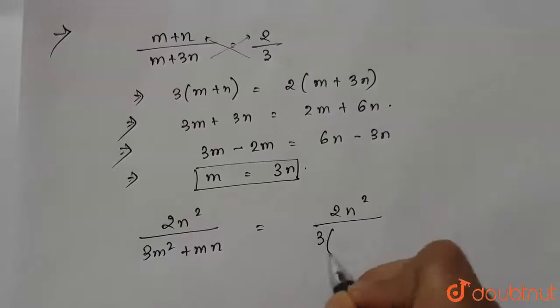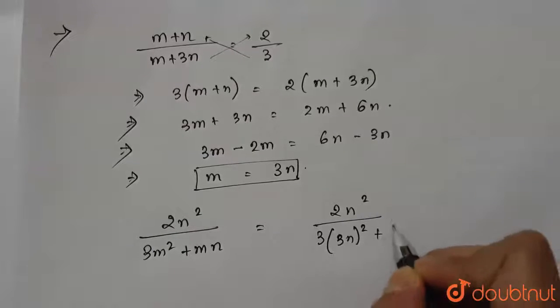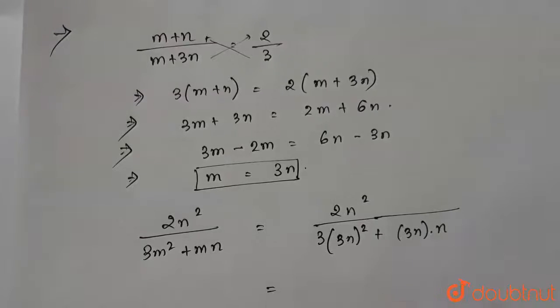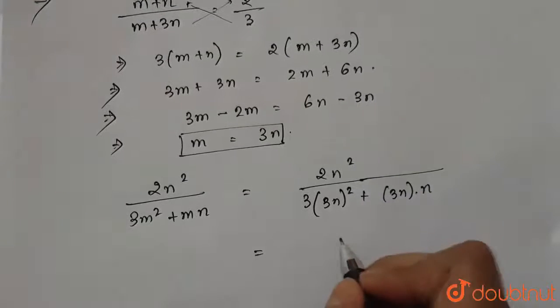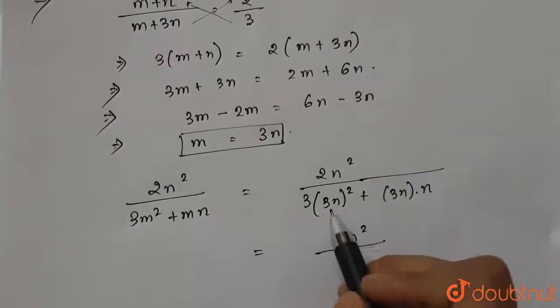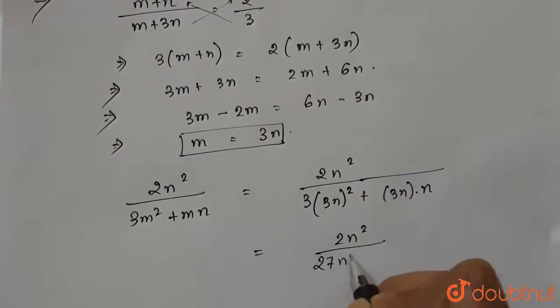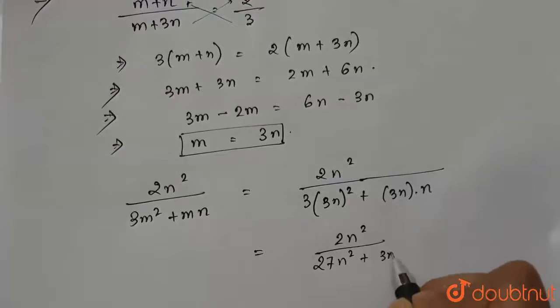Which equals 2n squared divided by 3 squared is 9 into 3, 27n squared plus 3n squared.